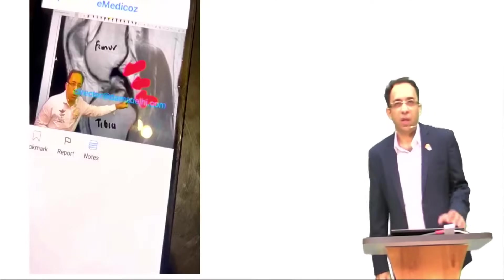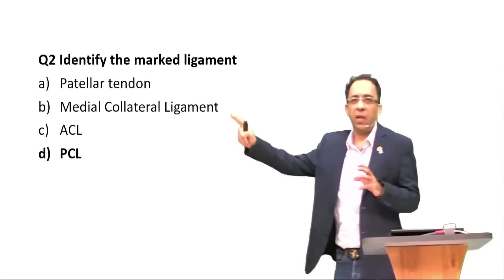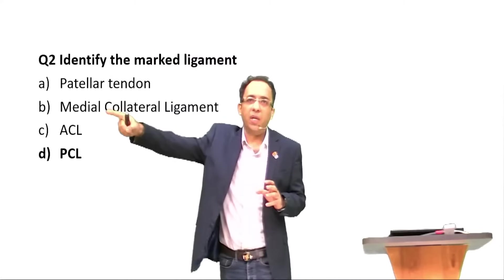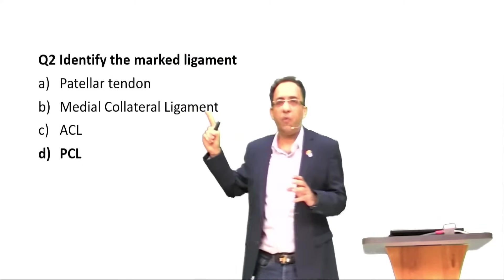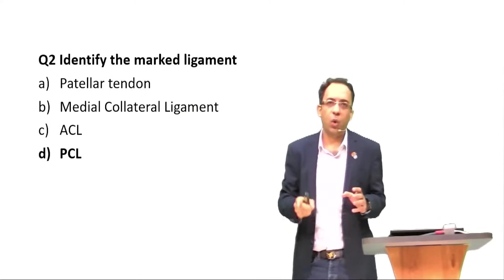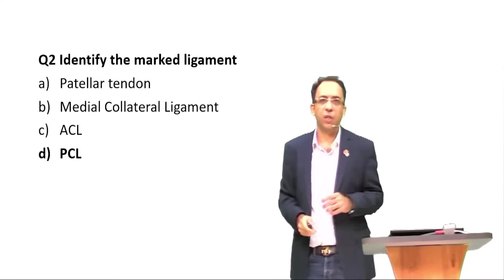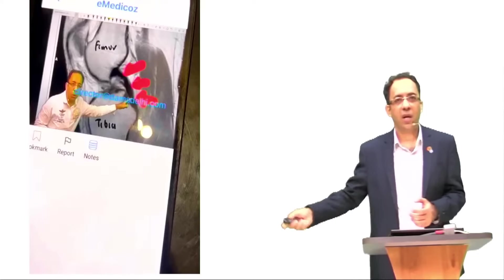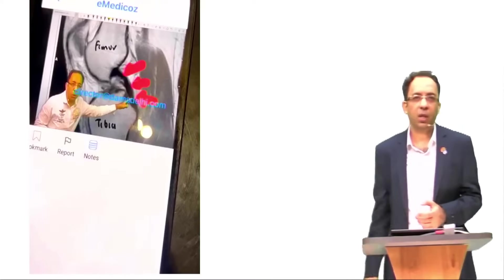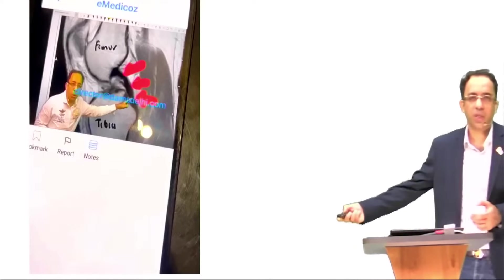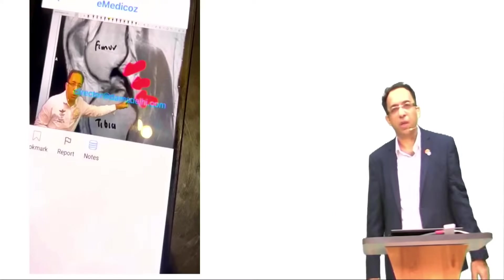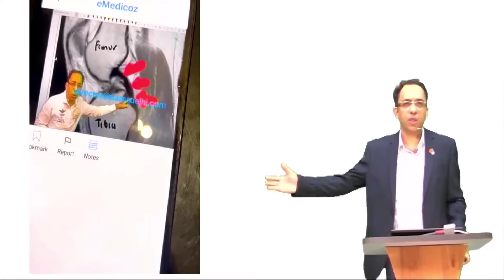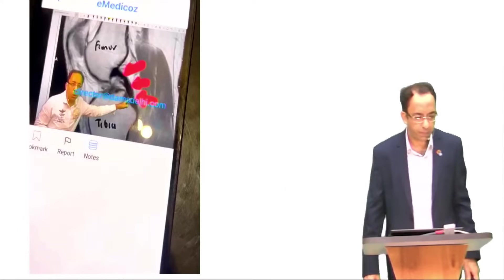Some of you got confused: patellar tendon will be more anterior, and medial collateral ligament will be seen on the coronal view on the medial side of the knee joint. This was posterior cruciate ligament directly from the class notes — it is there in your image book and workbook. Even if you joined a back-to-basics course, you would see this in your workbook.